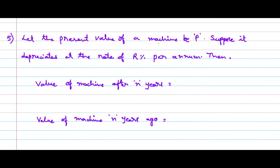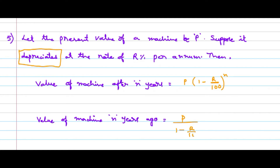Let the present value of a machine be P. Suppose it depreciates at the rate of R percent per annum. The formula is the same as population but the value is reduced. So the value of the machine after N years will be P into (1 − R/100) whole power N. Similarly, the value N years ago will be P divided by (1 − R/100) whole power N.